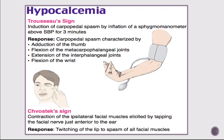For hypocalcemia, nurses can check Trousseau's sign by inflating a blood pressure cuff above the systolic blood pressure for three minutes. A positive sign is a carpopedal spasm — adduction of the thumb, flexion of the metacarpophalangeal joints, extension of the interphalangeal joints, and flexion of the wrist. Chvostek's sign is checked by tapping the facial nerve just anterior to the ear; twitching of the lip or spasm of facial muscles is a positive sign.